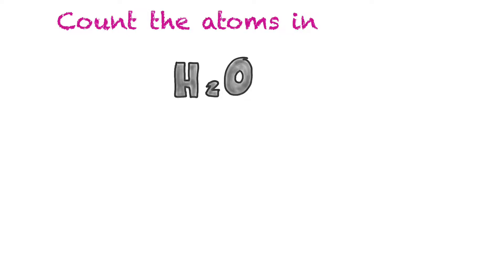We're going to practice. The first one, we're going to count the atoms in H2O or water. We have hydrogen and oxygen, and we have two hydrogens and one oxygen, so two plus one equals three atoms.